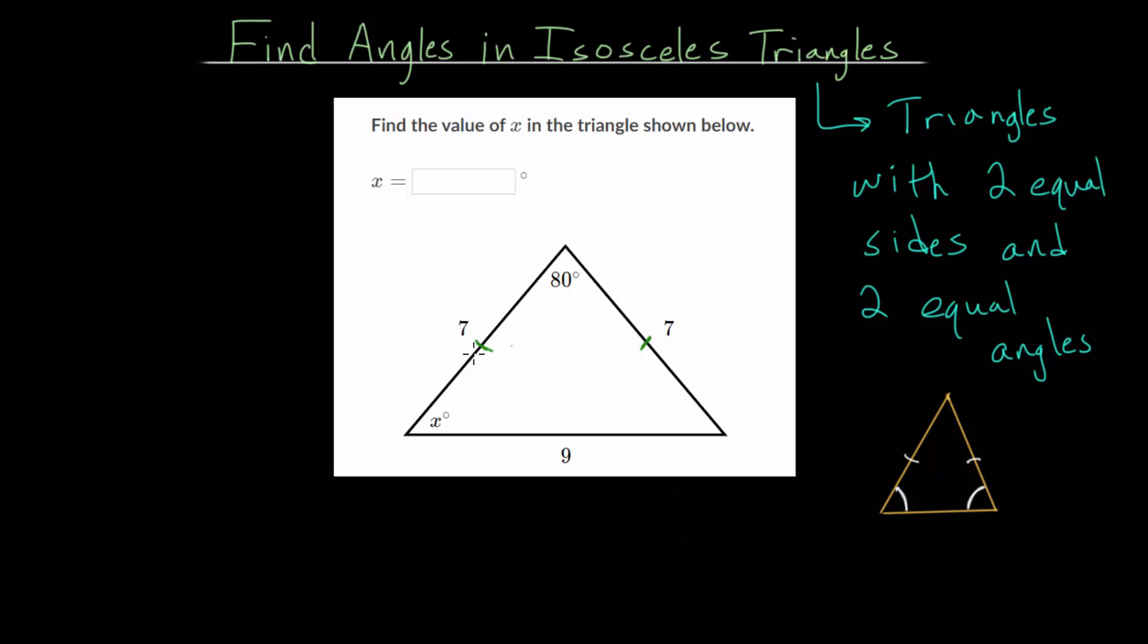And we know with an isosceles triangle that the angles opposite the equal sides, or the angles that open up to the equal sides, these are equal to each other. So this angle and this angle, these are both equal to X, whatever that angle measure is. So we can call this X degrees as well.